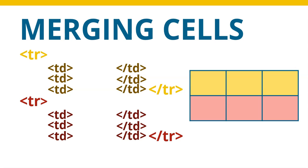Now what about this scenario? Let's go back to the original and reset it. You see that first column there? I want to merge that whole column. So I want that first block to stretch over multiple rows, basically.